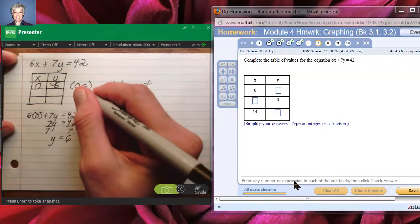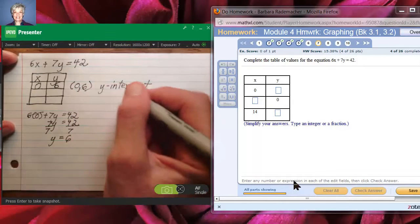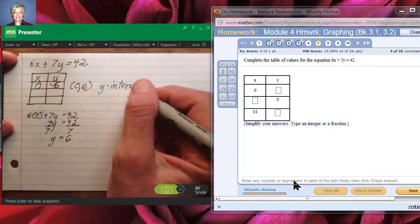That's the point where the line, the graph of the line, is going to cross the y-axis. You'll see all this in just a little while.